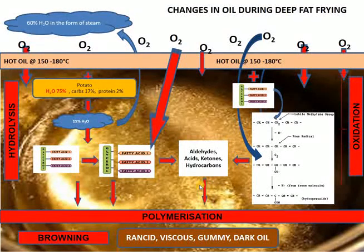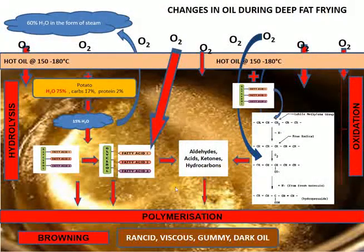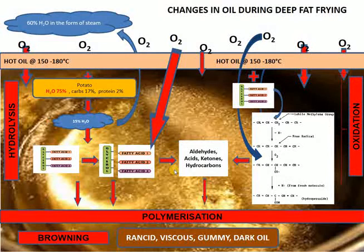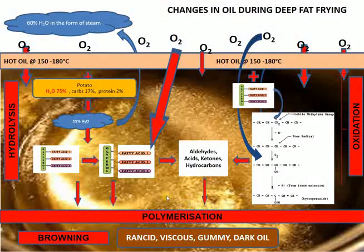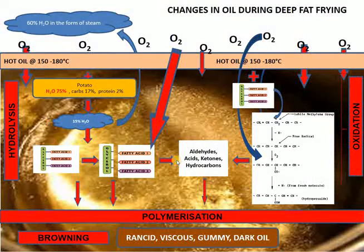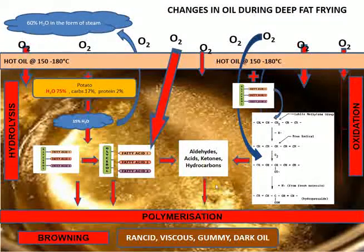You get all the off-flavors and off-odors: hydrolytic rancidity, oxidative rancidity, the oil is gummy and dark. The oil makes the product crispy, so all these oxidation products adhere to and are absorbed into the product. By repeatedly using oil that contains all these oxidation products, you are not only degrading the oil but also exposing the consumer eating the potato chips to harmful compounds. Lipid oxidation degrades essential fatty acids, degrades fat-soluble vitamins, and produces carcinogenic products.